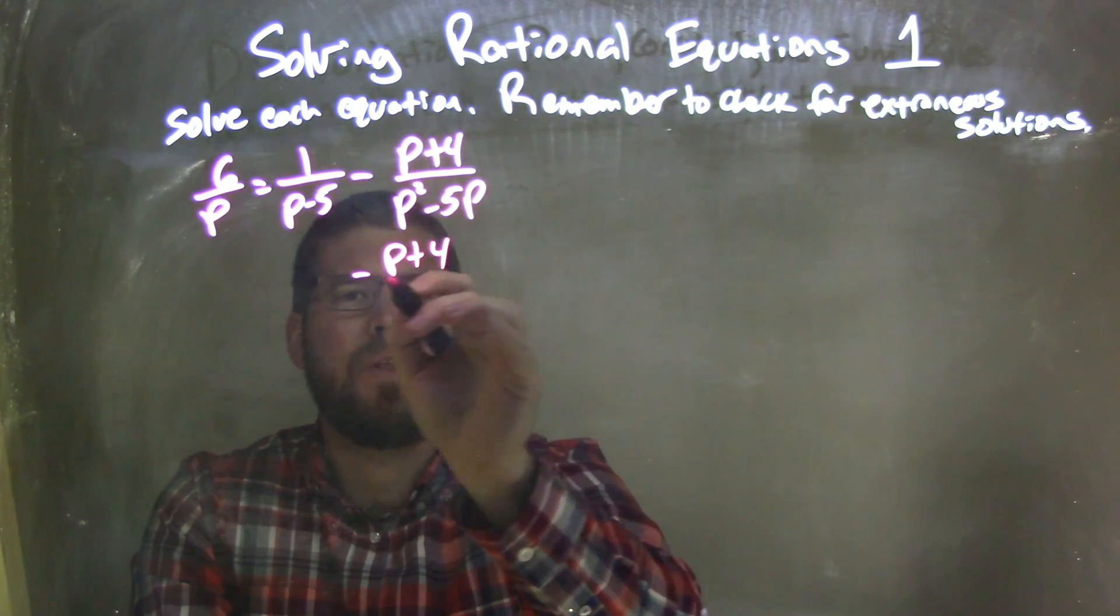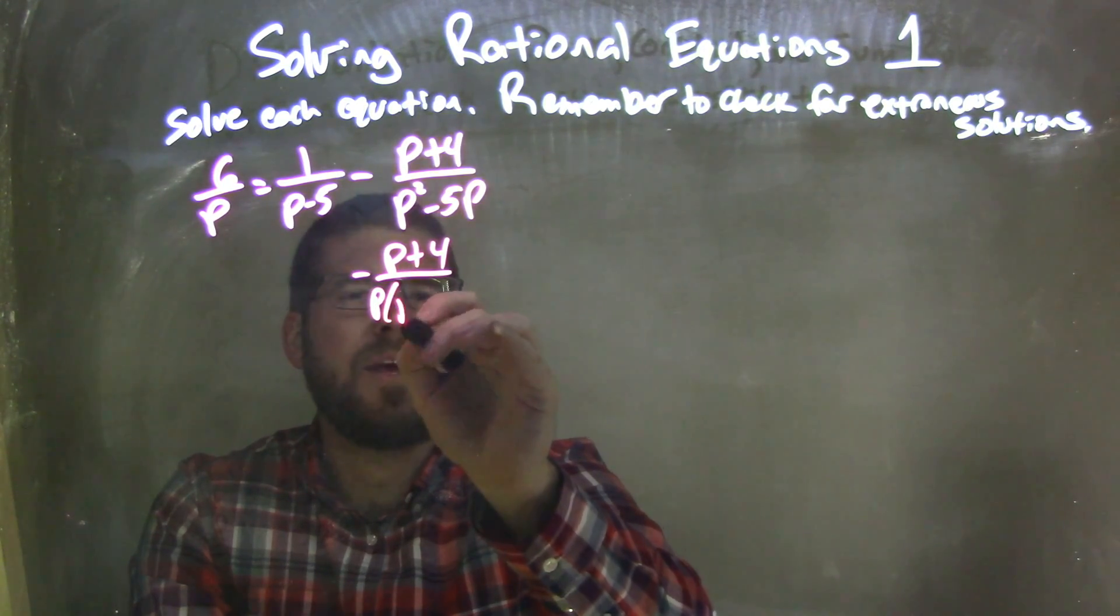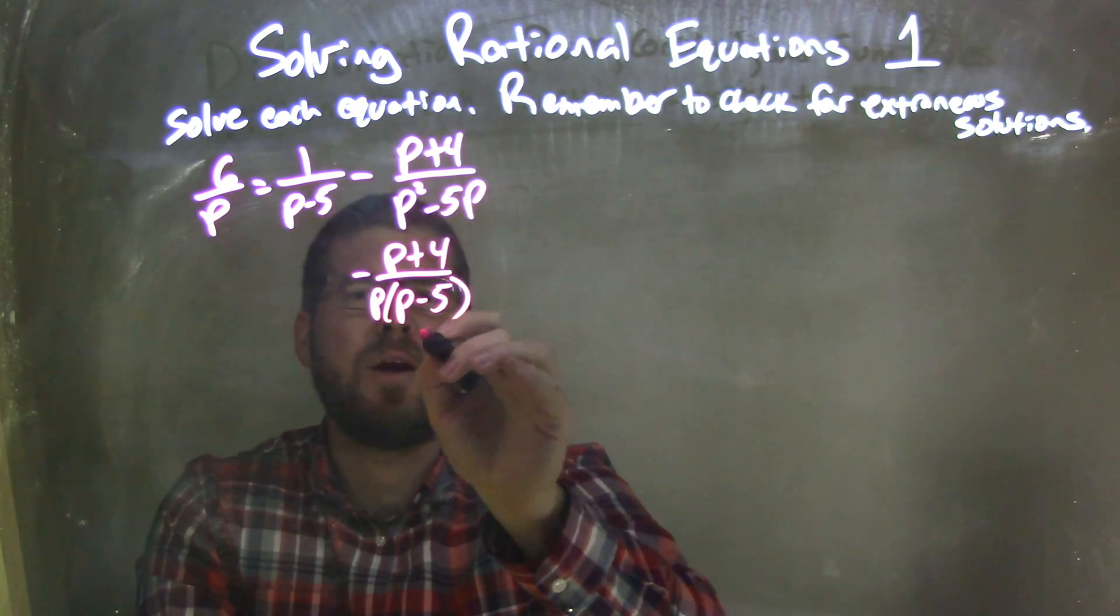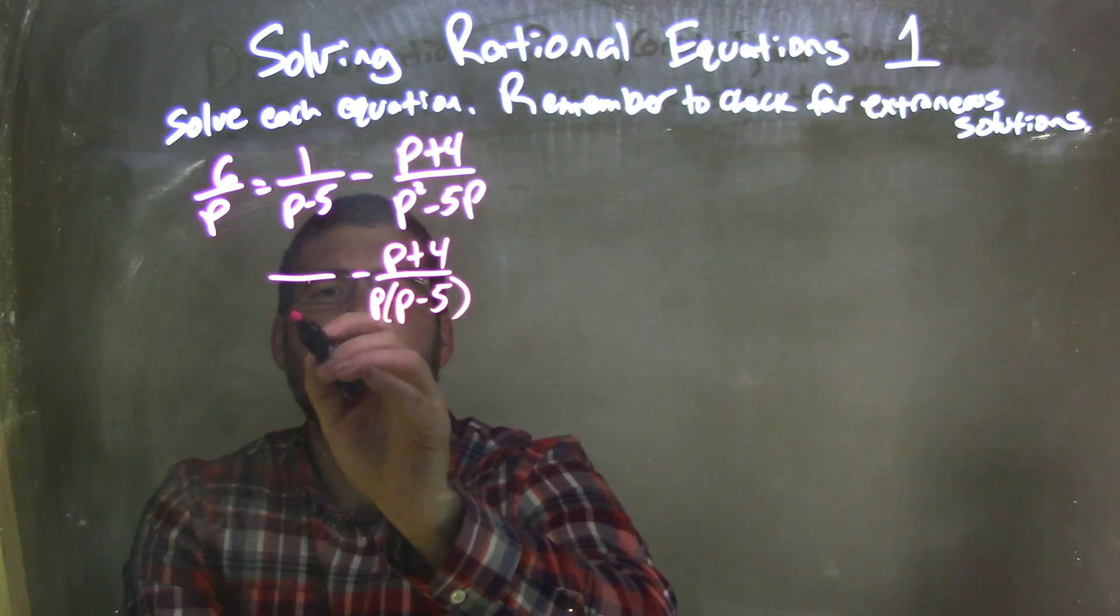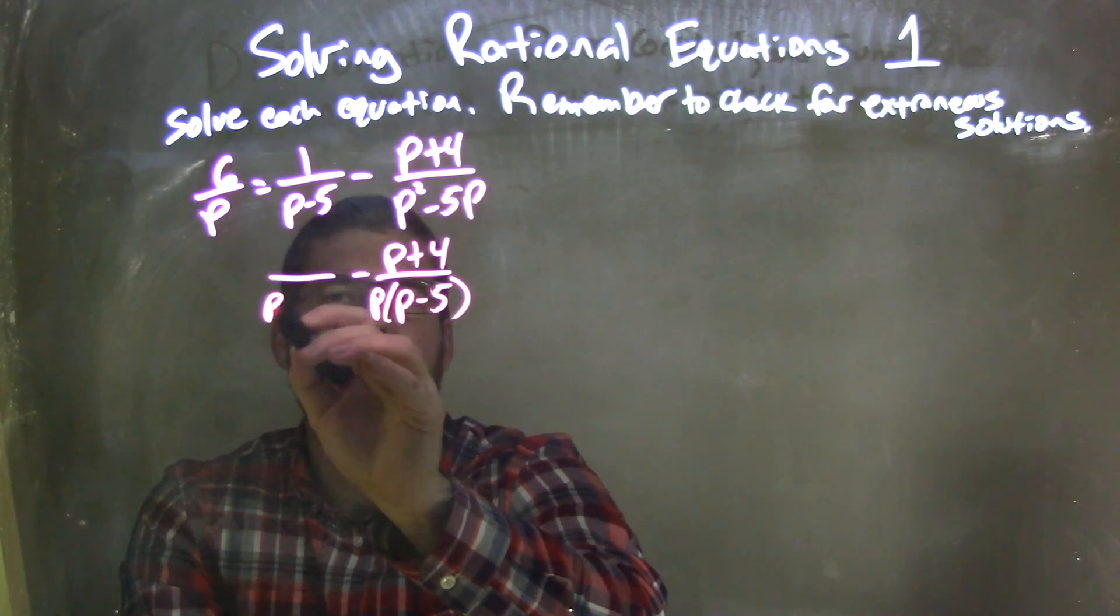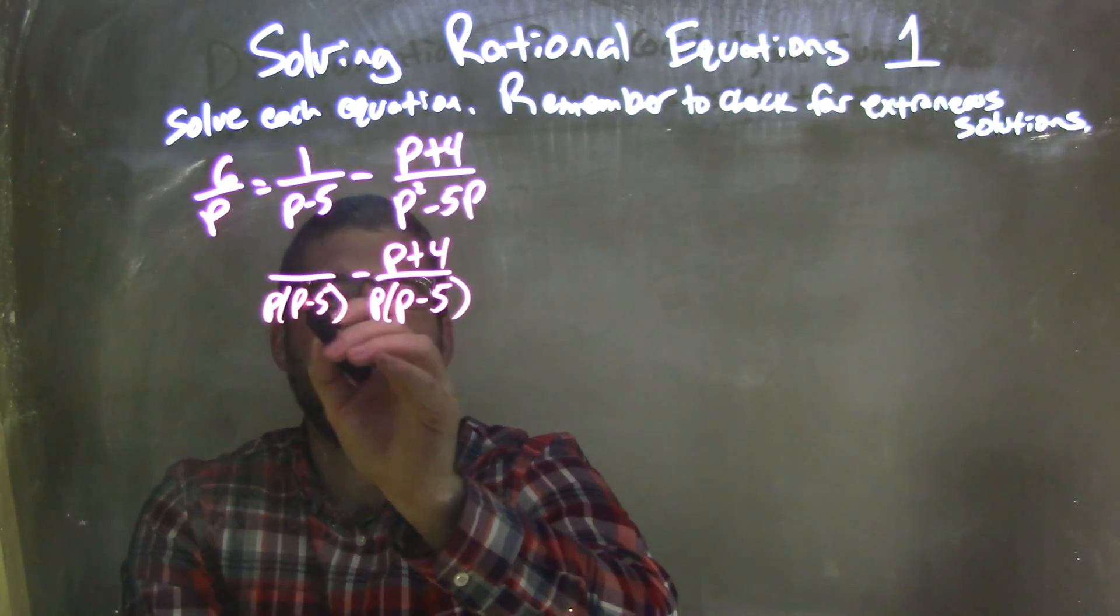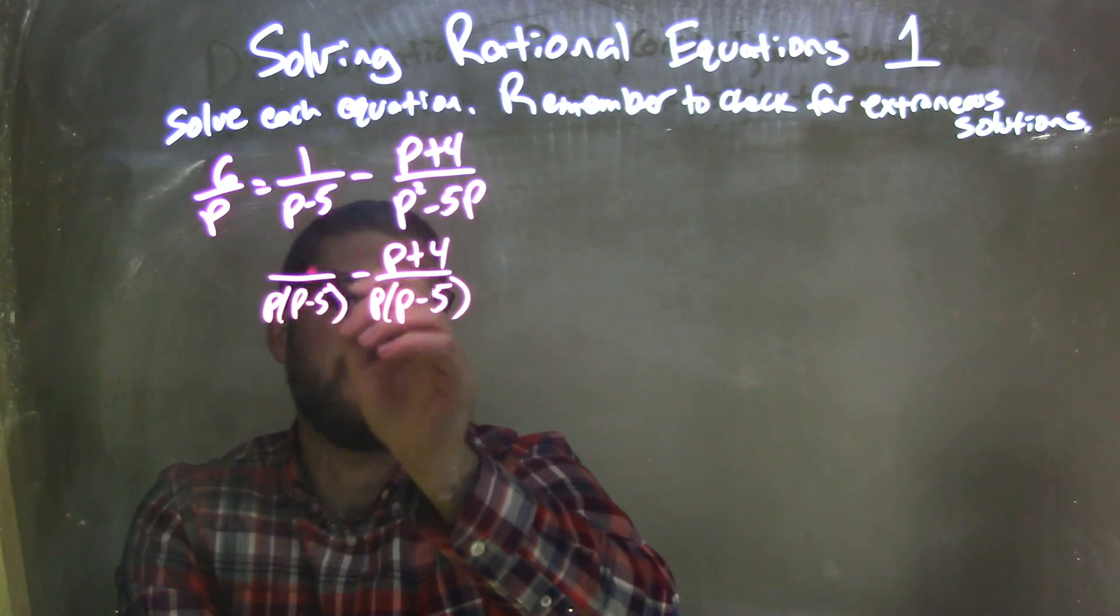So p plus 4 over, if I just factor or pull out a p, I have p minus 5 there, right? And so what I can do now to make it the same denominator, p times p minus 5, I multiply the numerator by p, and 1 times p is p.